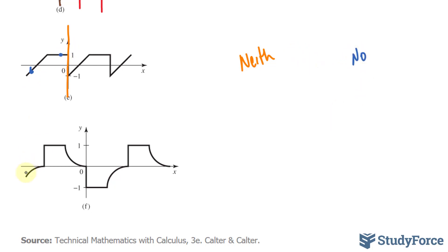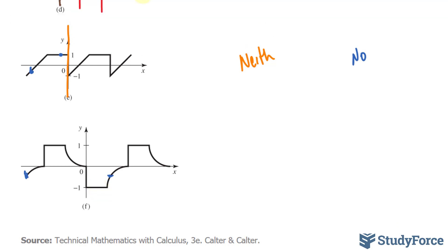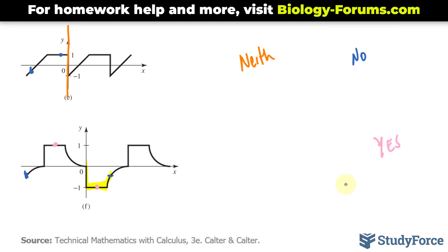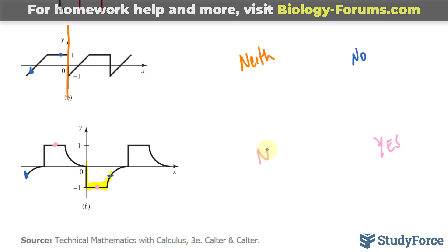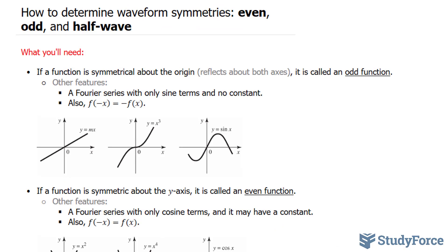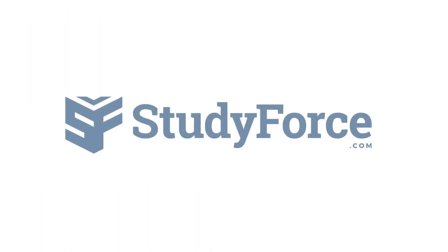Finally, in question f, the waveform starts here and ends here. Selecting a random point on the negative portion gives the same y-coordinate but opposite sign half a cycle away. So yes, this is a half-wave symmetry, and it is neither odd nor even. And that is how to determine waveform symmetries.